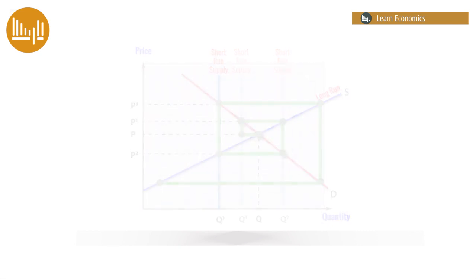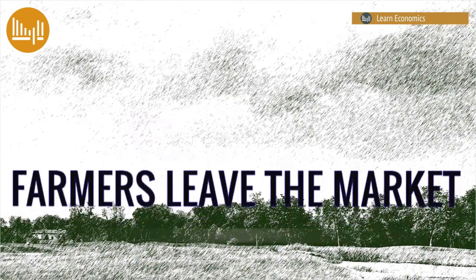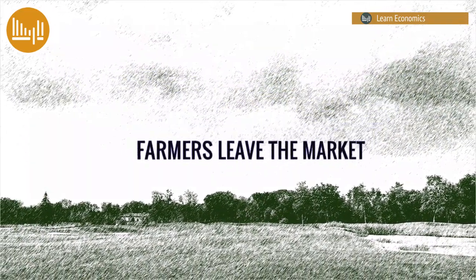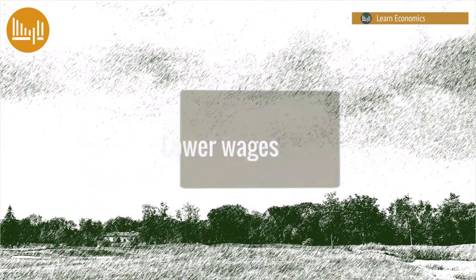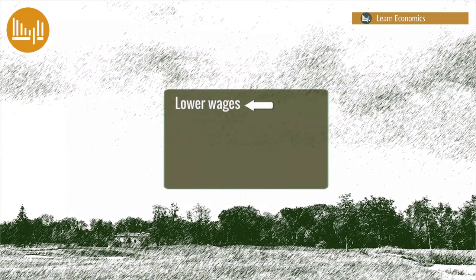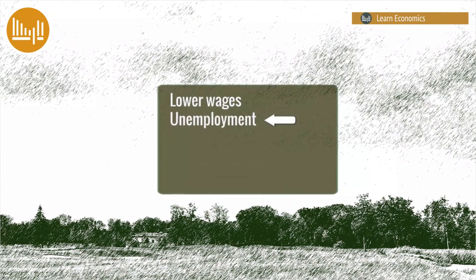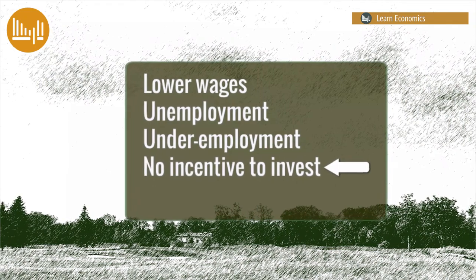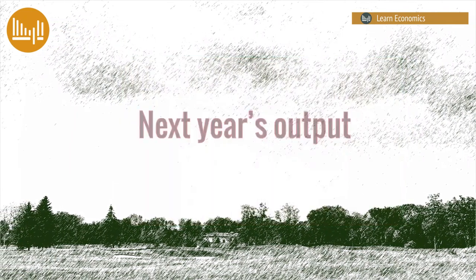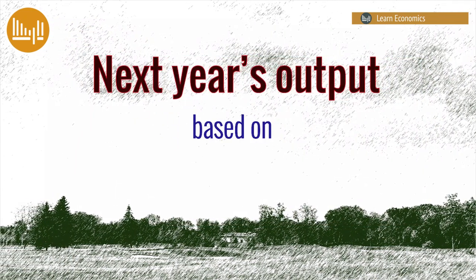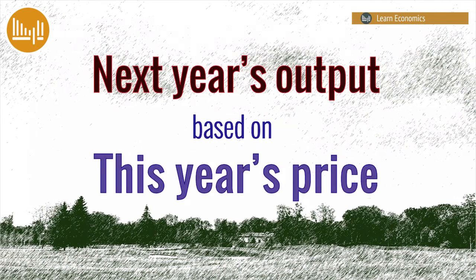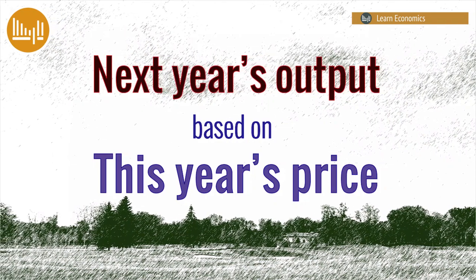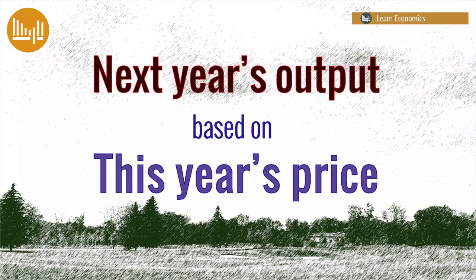The uncertainty and instability also have wider effects. Not only do farmers and growers leave the market, but farm workers receive lower or more variable wages, or become unemployed or underemployed. Farmers have less incentive to invest in new technology, forcing them to rely on inferior technology. At the heart of the problem is that decisions on next year's output are based on this year's price — producers expect that the price next year will be the same as this year, but this is clearly a case of information failure, with potentially disastrous results.